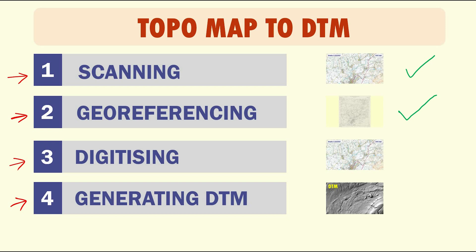For this digitizing stage, we are going to use software. Finally, after we have digitized or traced all the contour lines in our map, we move to the last stage for generating the digital terrain model, which is an easy step. Using the software, we are going to use some built-in interpolation methods for generating the final digital terrain model.